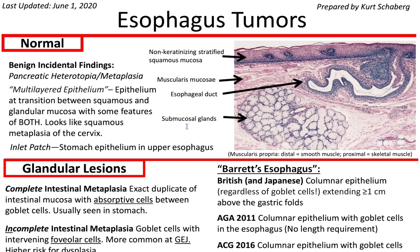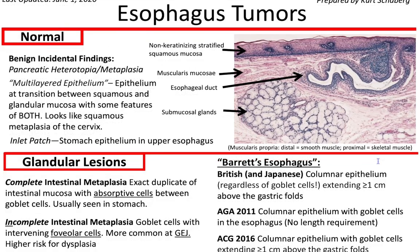You have esophageal ducts and submucosal glands. The esophagus also has submucosal glands, which makes sense — you need lubrication for food to go down into your stomach. Below the submucosa, and often not seen on biopsies, you have your muscularis propria. Distally towards the stomach you have smooth muscle, and proximally towards your mouth you have skeletal muscle.